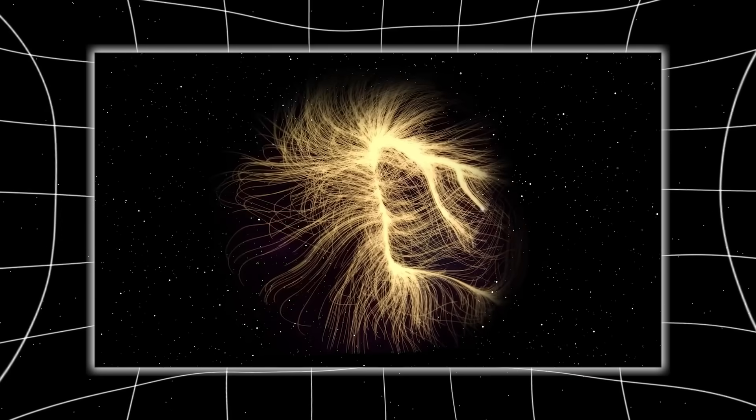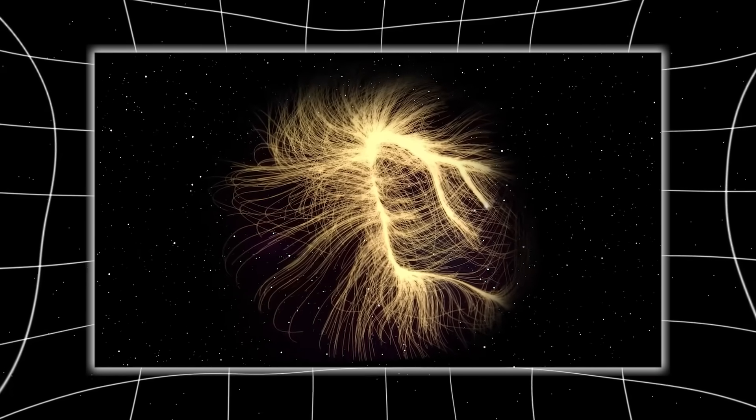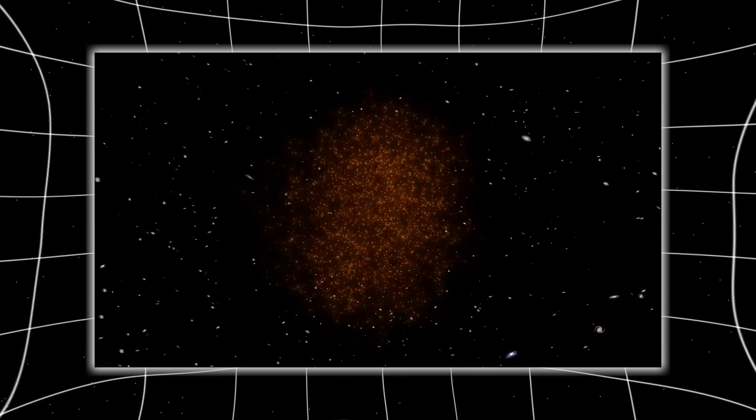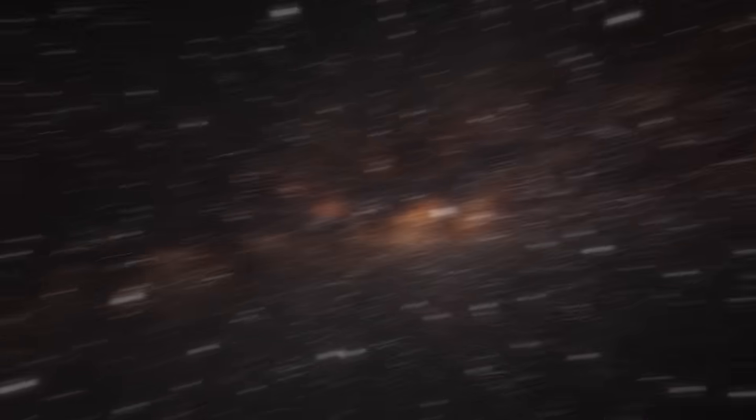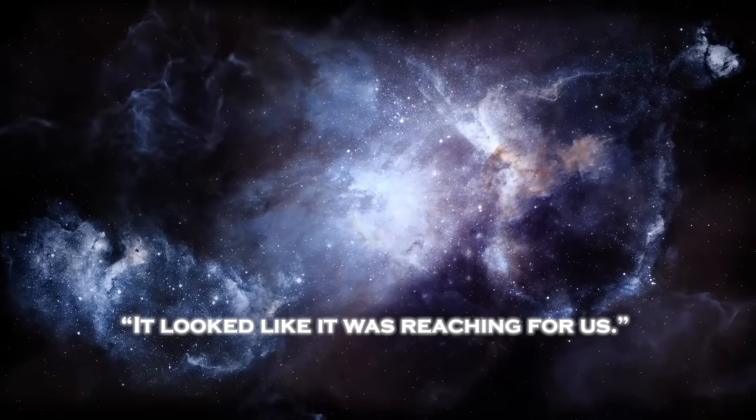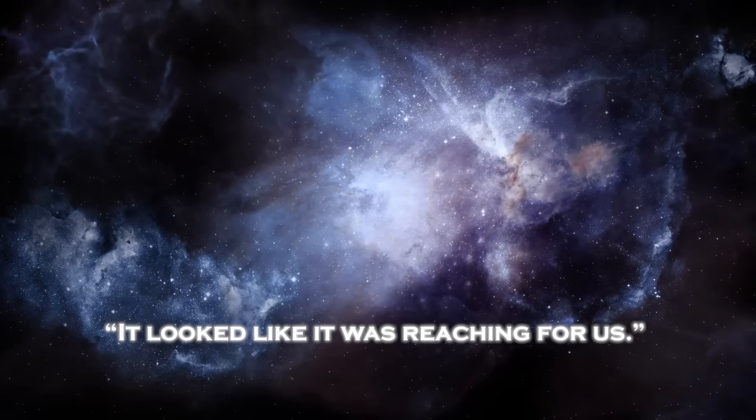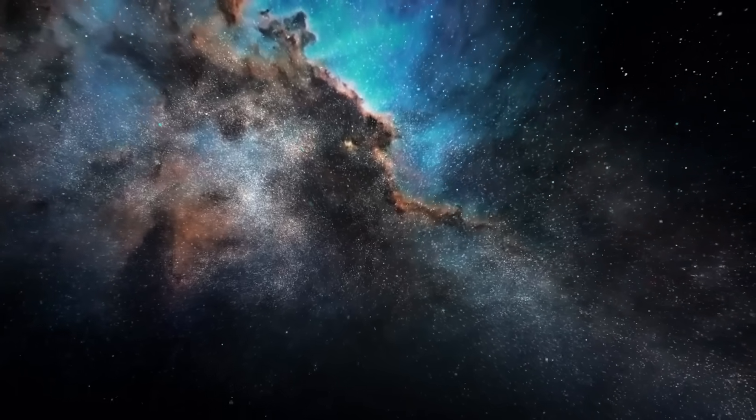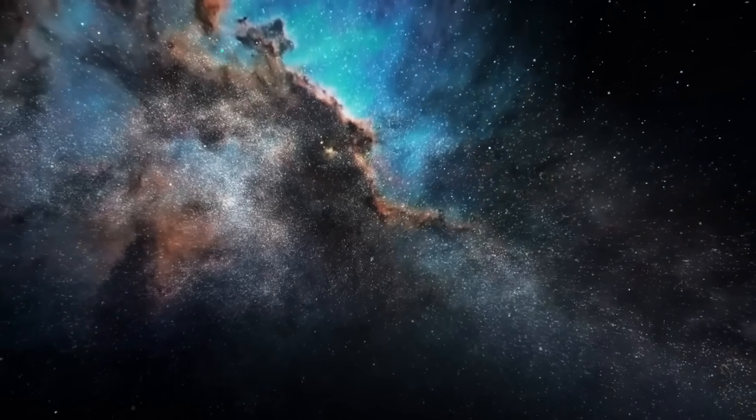Only once in the data did Parker capture such a formation. But the image, though blurred, showed a filament with a spiral tip, like a tendril. One physicist wrote in their internal log, 'It looked like it was reaching for us.' No one in the mission dared publish that phrase. But within the team, they all knew what they had seen, and what it implied.